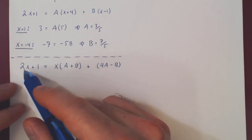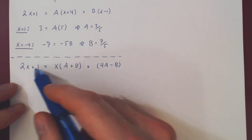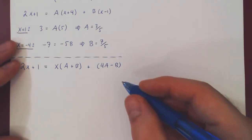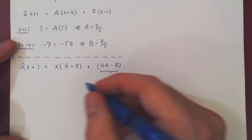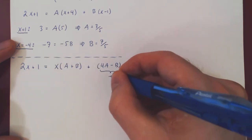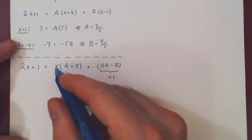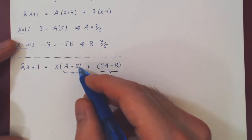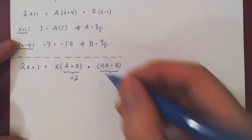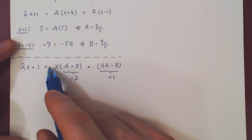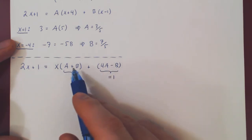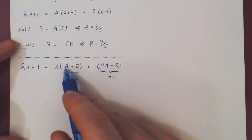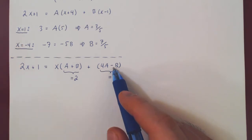We have an equality between two polynomials, but an equality between polynomials requires every coefficient to be the same. So the constant term 4A minus B must equal 1, and the multiple of x, A plus B, must equal 2. By rewriting in canonical form and equating like coefficients — constant with constant, multiple of x with multiple of x — we obtain equations that allow us to solve for the unknown coefficients.